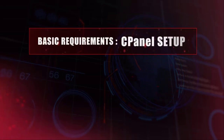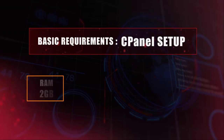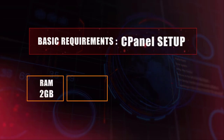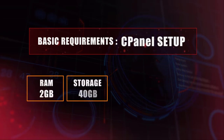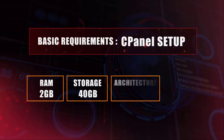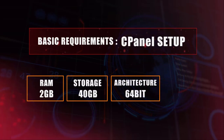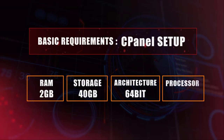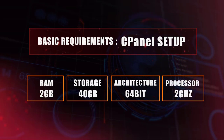Before moving further, we must know the basic requirements of cPanel. To complete the setup, we need 2 GB of RAM and 40 GB of storage. cPanel works on 64-bit architecture, and the processor should be about 2 GHz. Let's start with the next process.